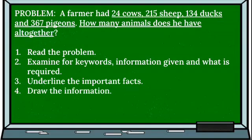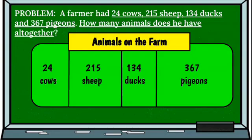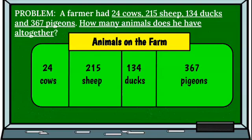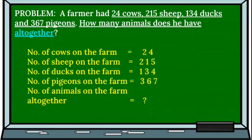Step 4: let's draw the information. Here we have our information — we are required to find out how many animals does he have altogether. So here we have the animals on the farm: 24 cows, 215 sheep, 134 ducks, and 367 pigeons. From that drawing, we can now move on to writing our statement. We have identified our animals.